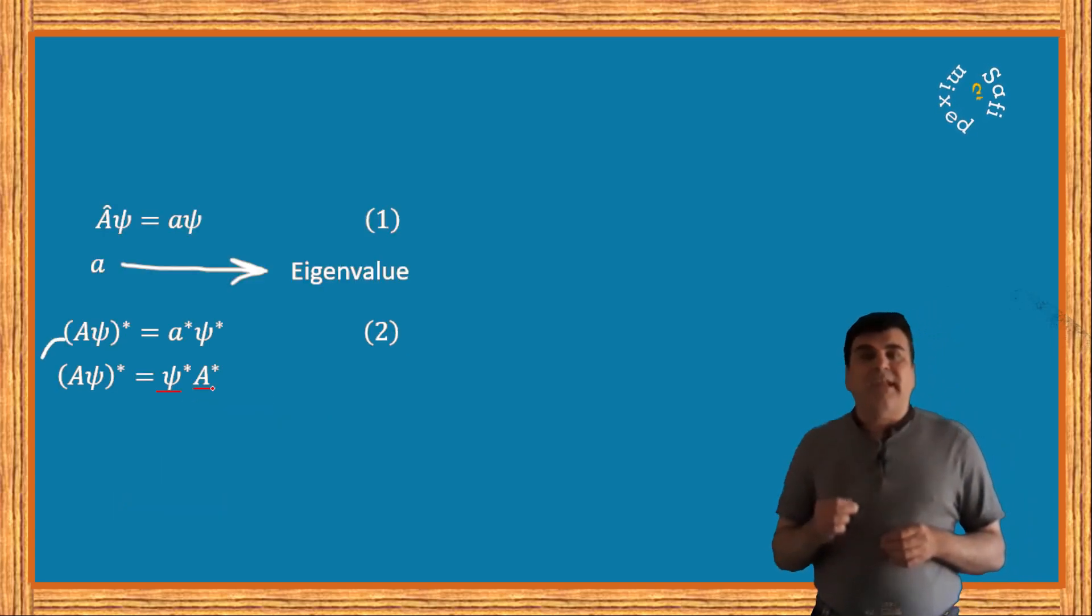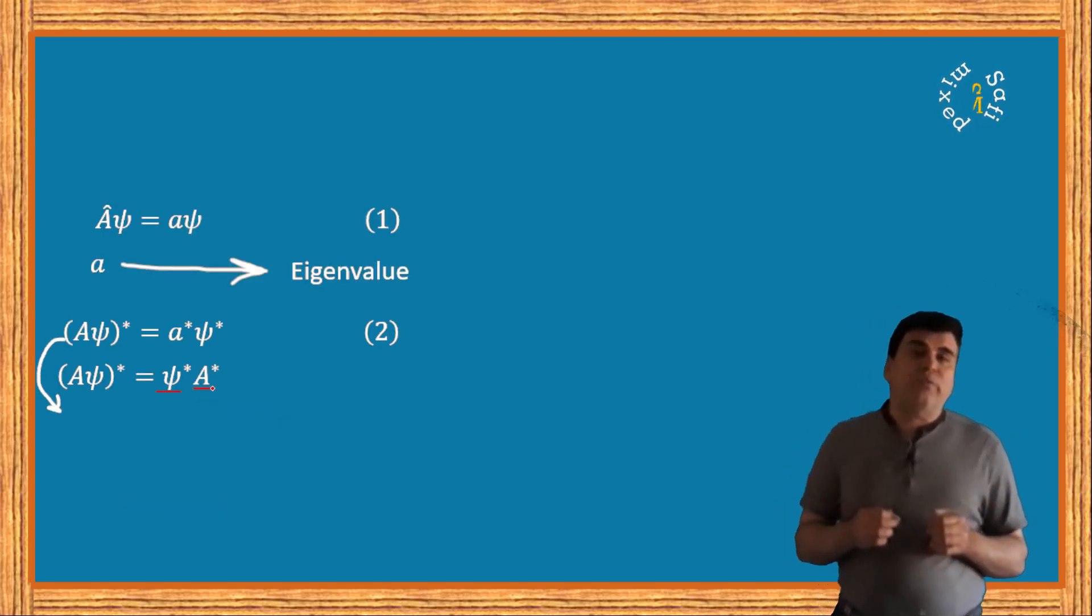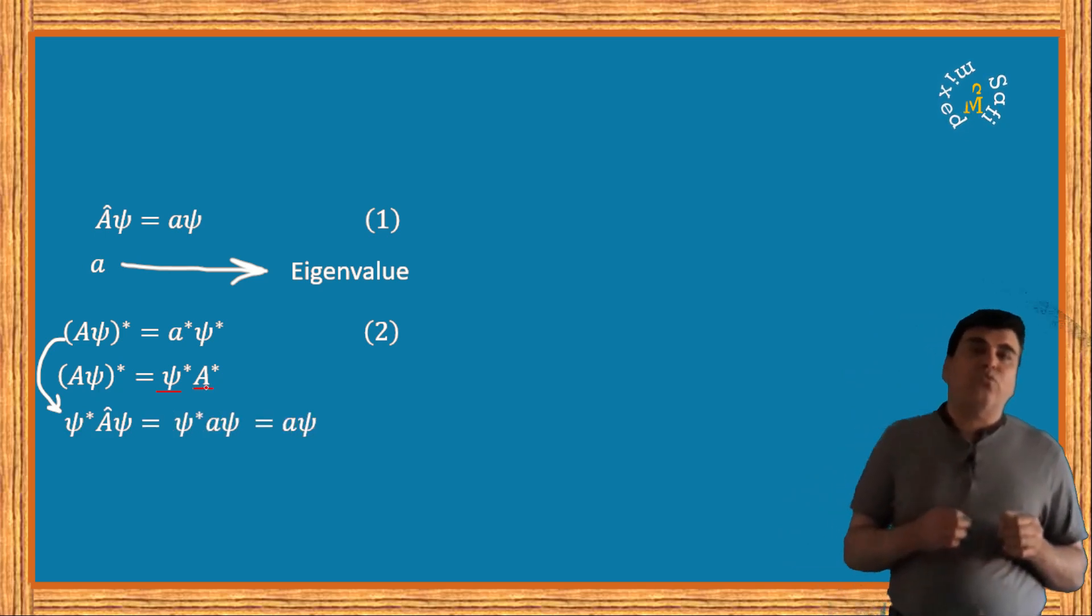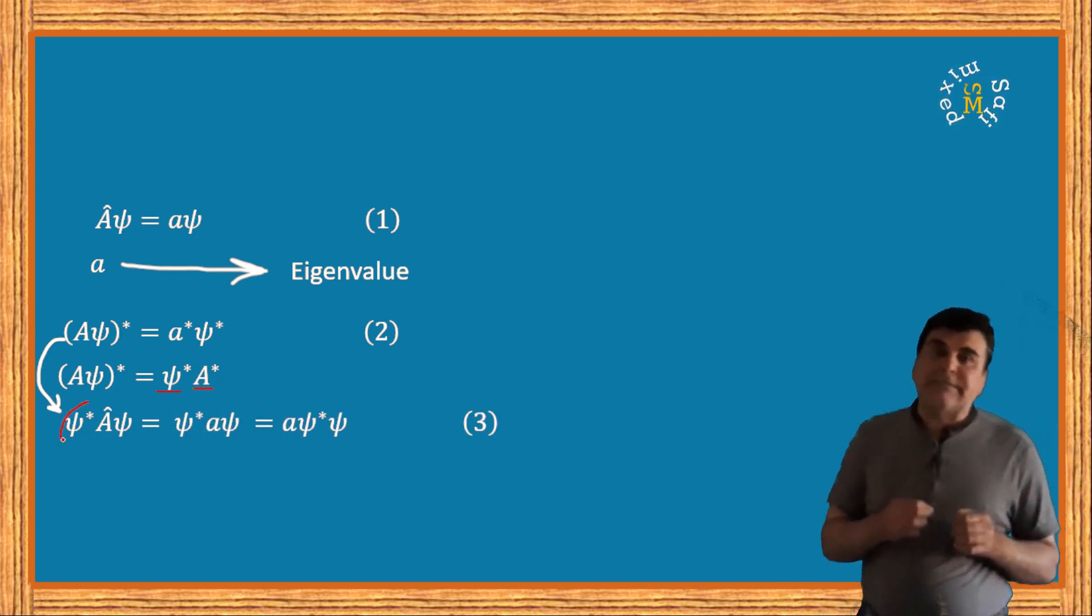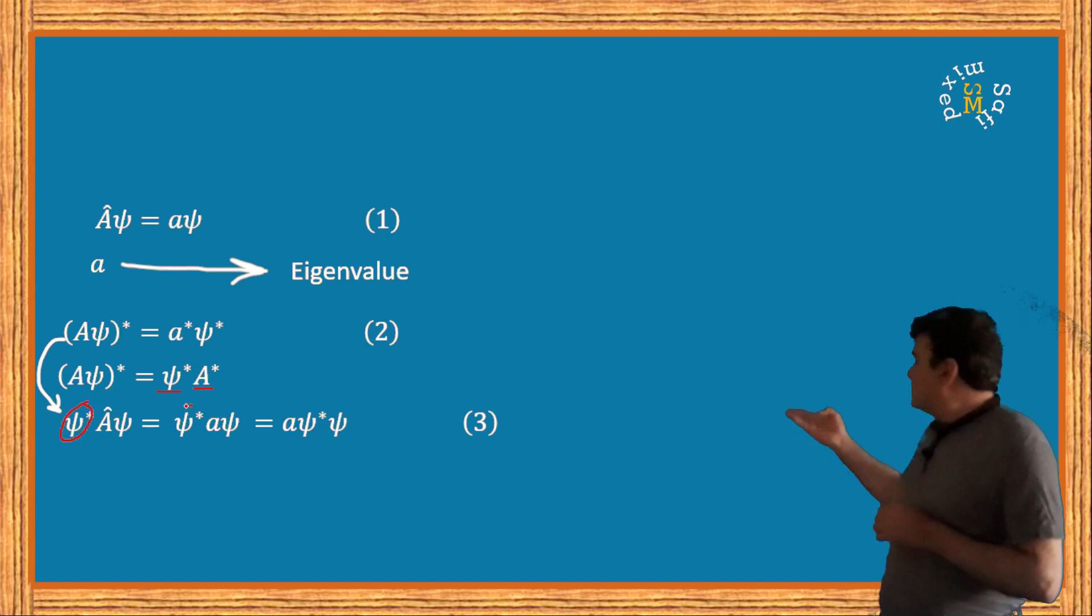Now multiplying equation 1 with ψ* from left and equation 2 with ψ from right, we can write the results as given in these two equations.